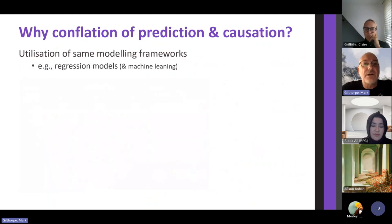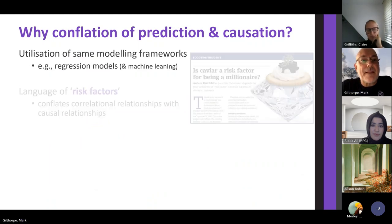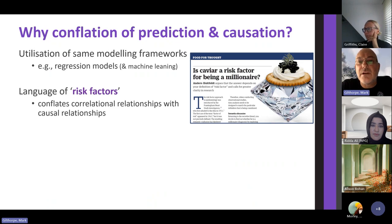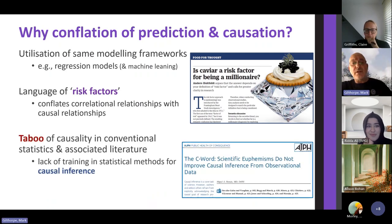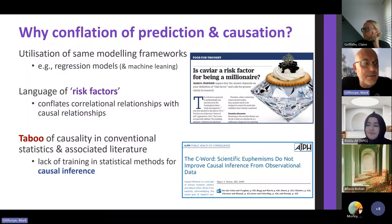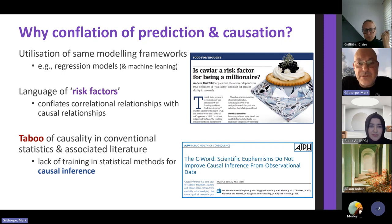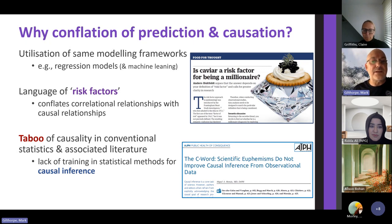Why do we make this mistake — conflating prediction with causation? The underpinning methods are very similar but need to be used in different ways. Sloppy language doesn't help. There's also a taboo about saying we can get causality from observational data. But millions are being spent on observational data analysis — if we do it right, you can use the C word, even though some journals say observational studies can't. Miguel Hernan is campaigning against that.